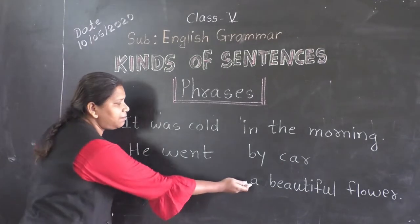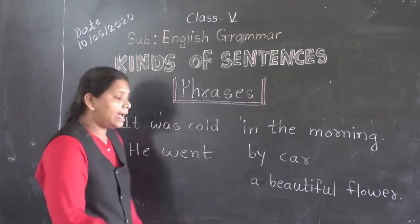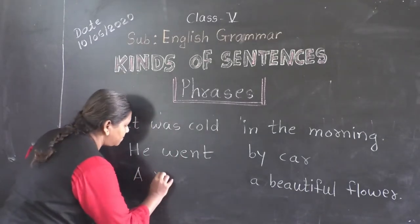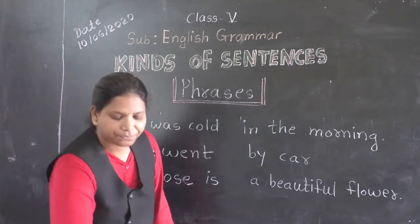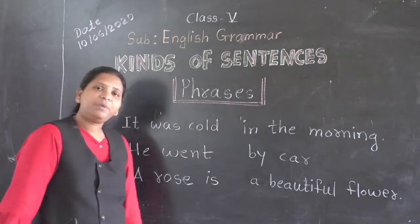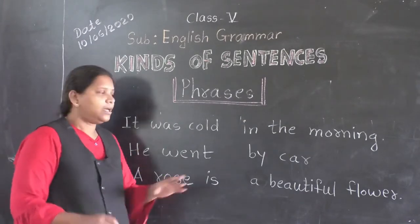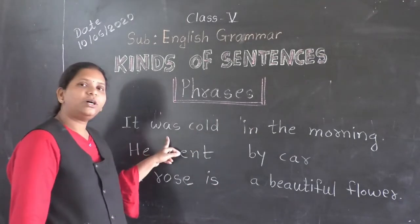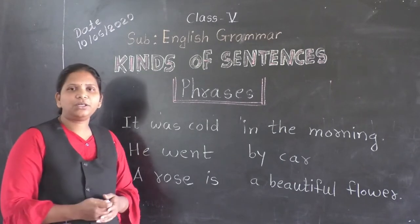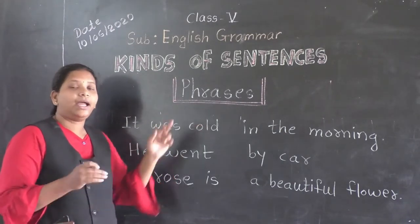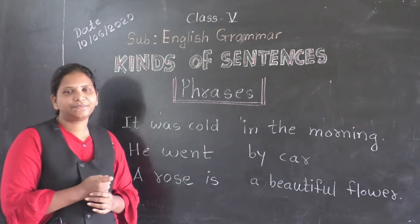The third example: 'A beautiful flower' — but when I add 'A rose is a beautiful flower,' now it makes complete sense. So this is the complete sentence. A phrase can be changed into a sentence by adding other words to it. Have you understood what is a phrase, what is a sentence, and what are the kinds of sentences?